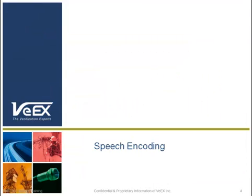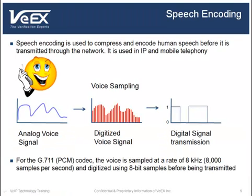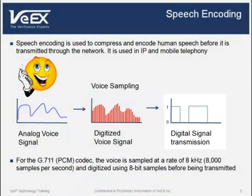We will now look at speech encoding and codecs. Speech encoding is used in IP and mobile telephony to compress and encode human speech before it is transmitted through the network. The G711 codec is commonly used to digitize a voice conversation for transmission over IP. With G711 Pulse Code Modulation, or PCM, 8,000 samples per second are taken from the analog voice signal, equivalent to a rate of 8 kHz. A sample is a measurement of the level of the analog signal, converted into an 8-bit sample providing 256 different levels. The G711 mu-law algorithm is used in North America to map the voice spectrum into these 256 different levels.